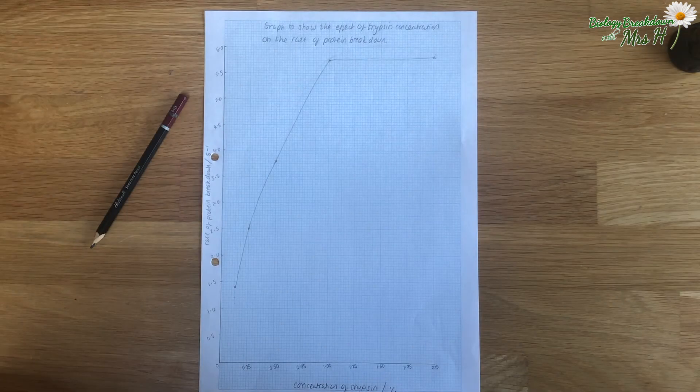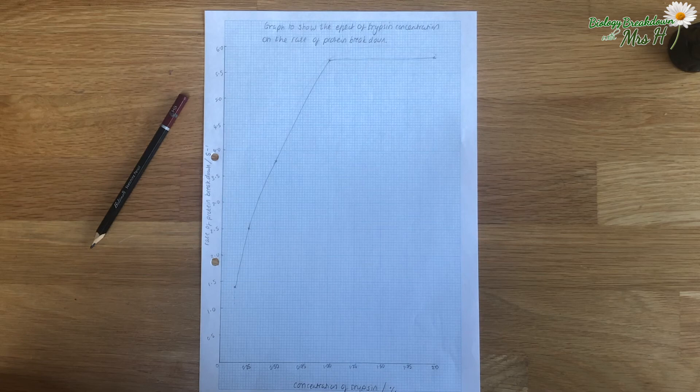The distance between one percent and two percent trypsin is quite a way and it's quite difficult to know well is my curve supposed to go that way. If you had a few more points plotted along the way then it would show the pattern more clearly and that would improve the accuracy of your graph.